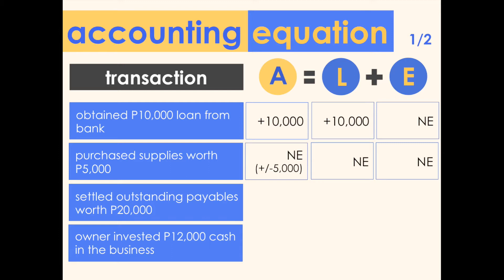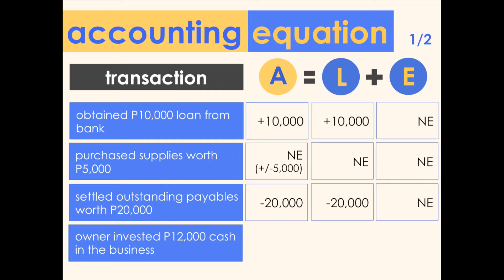Transaction three: settled outstanding payables worth 20,000 pesos. A cash payment was made, so this is a decrease in assets of 20,000 pesos. Since the payable was already paid or settled, there is also a decrease in liabilities of 20,000 pesos. The impact is a 20,000 decrease in assets and a 20,000 decrease in liabilities — no effect on equity. Both sides of the equation are equal.